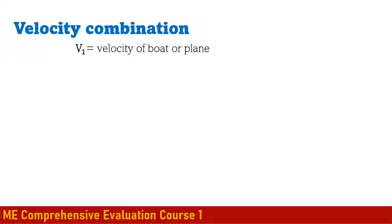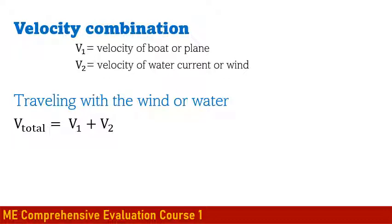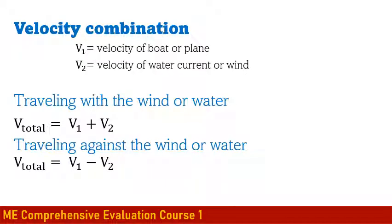Velocity Combination: Let V1 be the velocity of a boat or plane, and V2 be the velocity of water, current, or wind. The velocity of a boat or plane differs depending on whether it's moving with or against the water, current, or wind. If traveling with the wind or water, total velocity equals V1 plus V2. If traveling against the wind or water, total velocity equals V1 minus V2, making it slower.